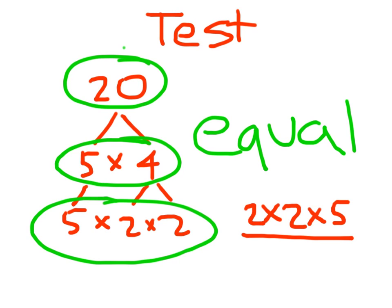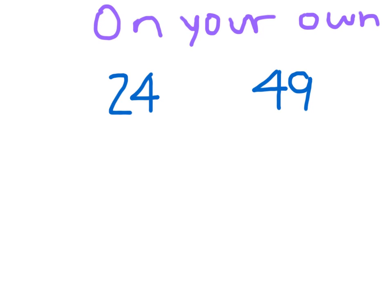What do you think 2 times 2 times 5 evaluates to? 2 times 2 is 4, times 5 is 20. On your own, I want you to draw a factor tree for the numbers 24, 49, and 32. Also find the prime factorization for each of these numbers — order those factors, remembering they must be prime numbers on the lowest level. Go ahead and hit pause, and after the break your answer should look exactly like what will be on the screen.